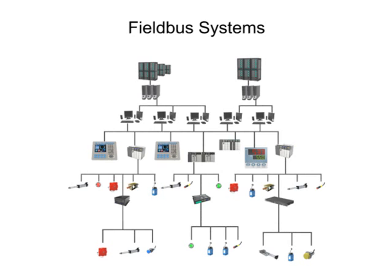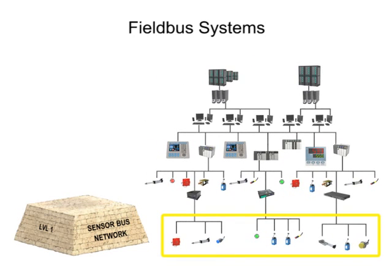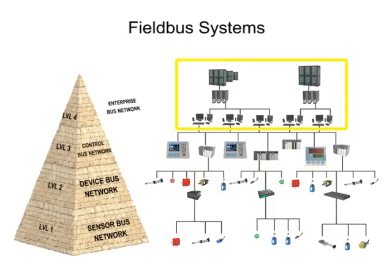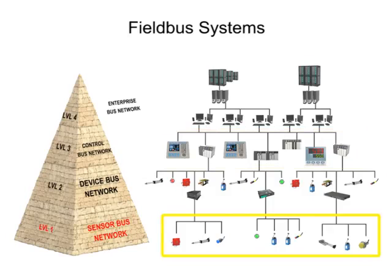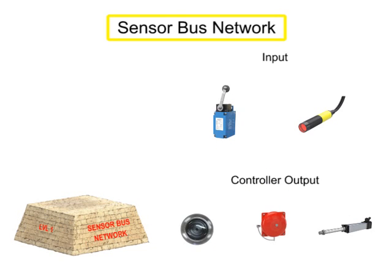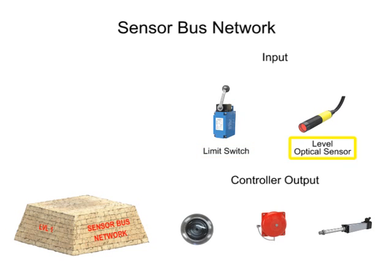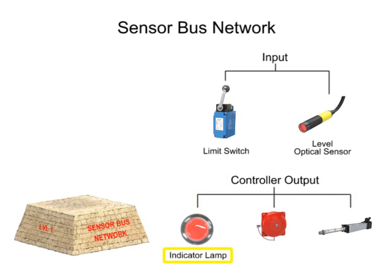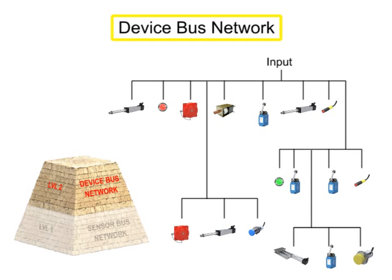Fieldbus industrial networks can be broken down into four levels, each with increasing levels of complexity. The most basic level is the sensorbus network. Sensorbus networks are the least complex networks developed for industrial application. Multiple basic field devices like limit switches or optical sensors are connected to one network cable, and the sensorbus network is also capable of transmitting output signals from the controller over one cable to indicator lamps, alarms, or other actuator devices.